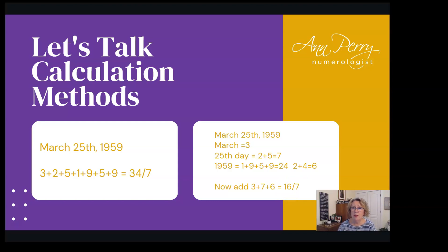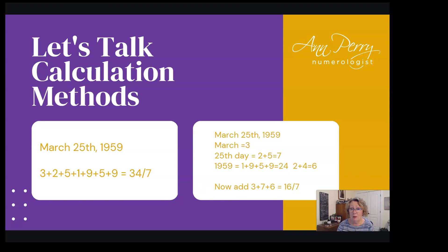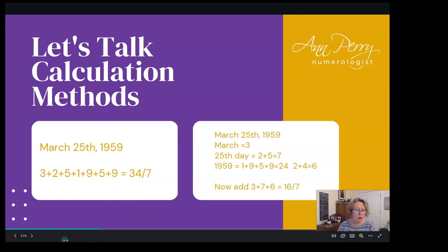I've mellowed a lot since then. I believe you have to do the calculation both ways, because what's important is not being right — neither method can be proven. The only way to be assured you have the right life path number is to tap into how it makes you feel. When I felt into 34/7, I was not that. When I tapped into 16/7, that was a better fit. I encourage you to do the same.